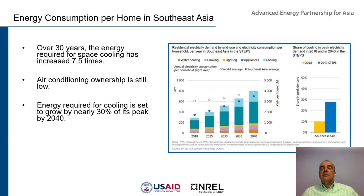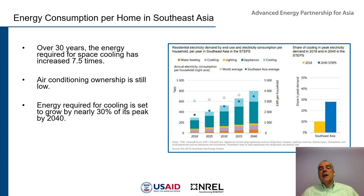Regarding the prediction for evolution of energy uses in Southeast Asia: there is an expectation of an increase in cooling over time and increased use of appliances, meaning electricity demand is expected to grow quite a bit. Over 30 years, energy required for space cooling has increased seven and a half times. Air conditioning ownership is still very low, so there is strong potential for further increase. An increase of 30 percent above peak by 2040 is expected, which represents significant concerns about electricity demand in Southeast Asia.